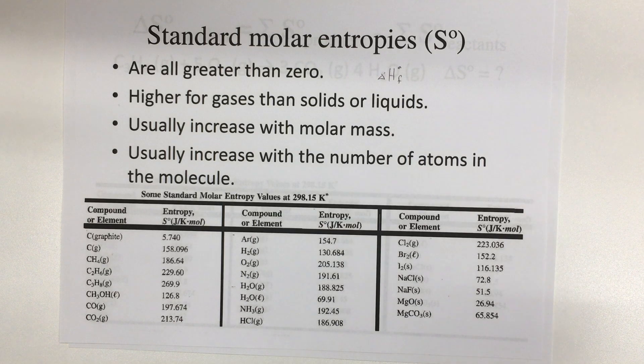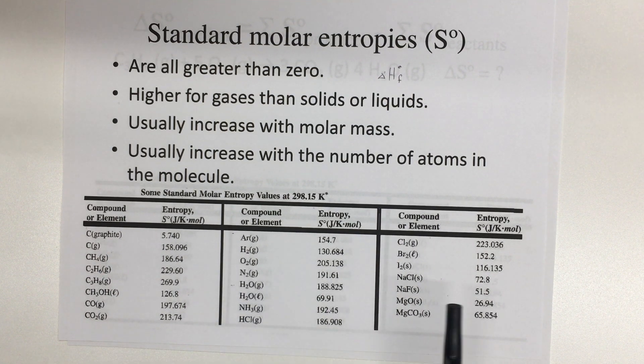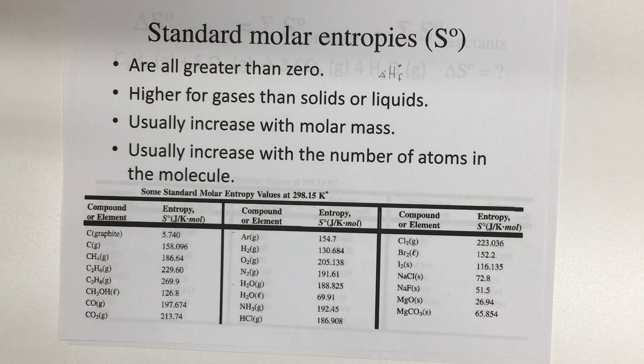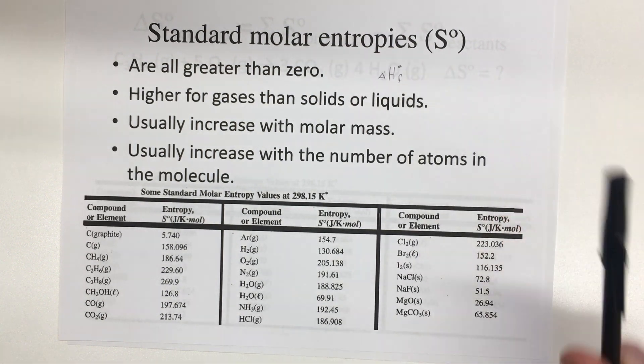That's not true for the entropies. Even an element in its standard state will still have a standard molar entropy that's greater than zero. And so you can see that for things like carbon or oxygen or nitrogen. These things all have entropies that are not zero. They would have enthalpies of formation, delta H formation of zero, but for entropy, they're not zero.